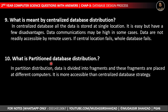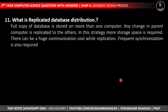What is partitioned database distribution? In partitioned distribution, data is divided into fragments and these fragments are placed at different computers. It is more accessible than a centralized database. What is replicated database distribution? A full copy of the database is stored on more than one computer. Any change in the parent computer is replicated to the others. In this type, more storage space is required, there can be huge communication cost during replication, and frequent synchronization is also required.